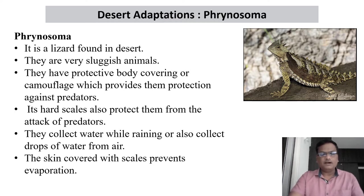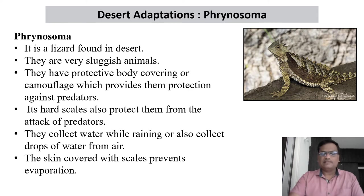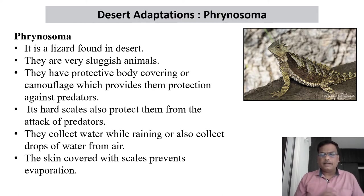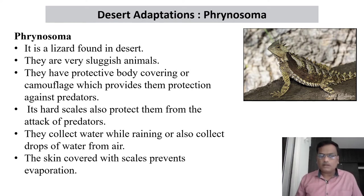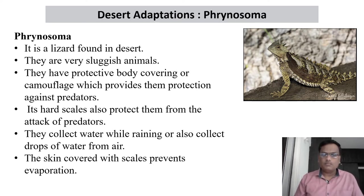Phrynosoma is a lizard found in the deserts of some countries. They are very sluggish animals. This sluggish nature is an adaptation because if they move very fast they need more energy, and to produce energy you need food. When the animals move very fast they also lose more water from the body. So this is a special condition where the animal cannot waste energy and cannot lose water — therefore they have adapted for a sluggish type of life.